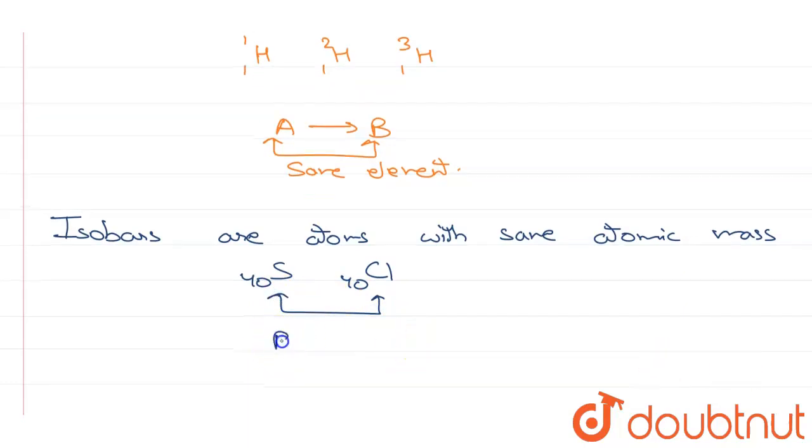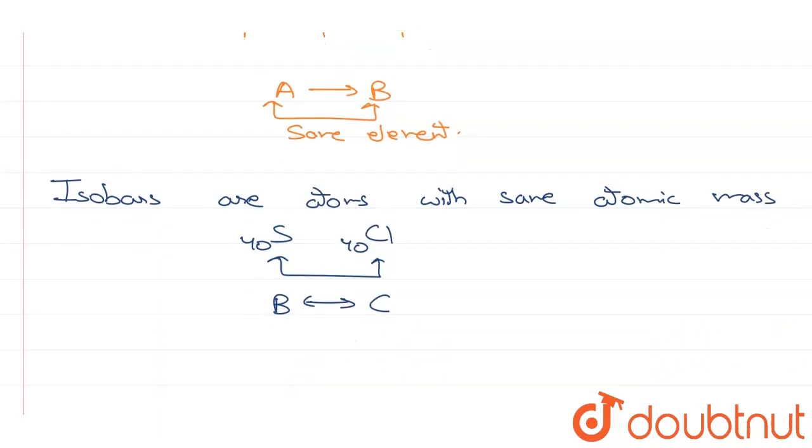So if B and C are isobars, that means they have the same atomic mass, but clearly they are not same elements. They are different elements.